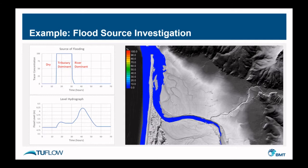This is an interesting example. Here a tracer has been applied to the smaller tributary in the model, and the concentration of that tracer in the floodplain downstream has been monitored to see when the flooding was dominated by flow originating from the tributary, or alternatively flooding originating from the main river. The graphs on the left show this. You can see the concentration graph at the top, where the particular location we're inspecting starts out as dry, then the concentration goes up to 100, basically representing that the inundation was due to the tributary out-of-bank flow.